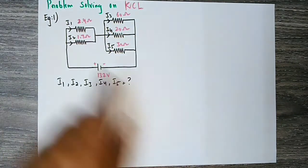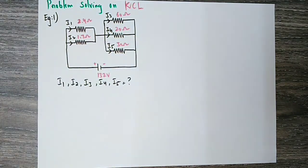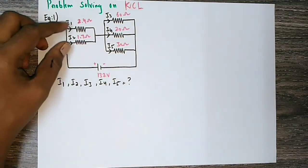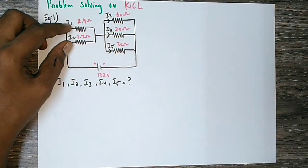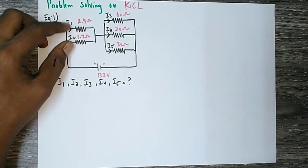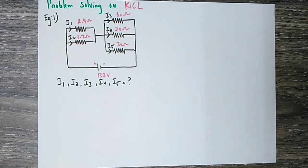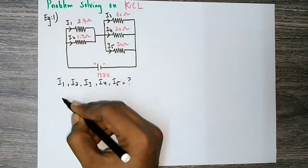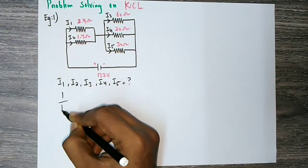We have a 132V supply and a resistor with a given value. Now, we have two resistors connected in parallel. We can simplify them using the parallel resistance formula.